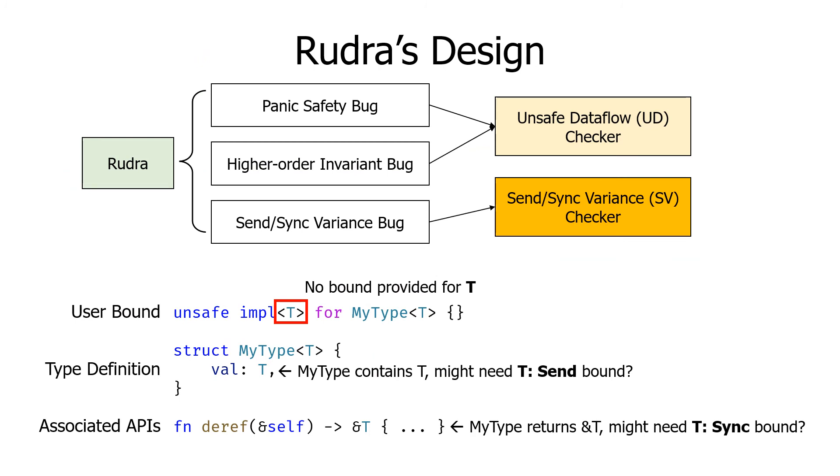The next algorithm is the send-sync variance checker. It first looks at the user-provided bounds on the type parameters. Then it compares it with the inferred bounds from the type definition and associated APIs. In this example, the send-sync variance checker looks at the type definition and thinks that T: Sync bound might be needed. Then it also looks at the associated APIs to infer that T: Sync bound might be needed based on the API signature. If there is any mismatch between the user-provided bound and the inferred bound, the send-sync variance checker reports a warning.